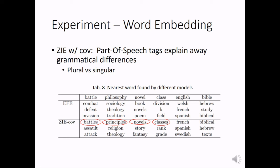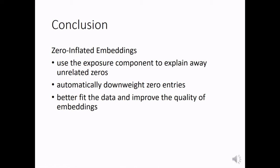Now we conclude. Our zero-inflated embeddings use the exposure component to explain away unrelated zeros. In this way, they can automatically downweight zero entries. They can better fit the data and improve the embedding quality. Thank you for your attention.